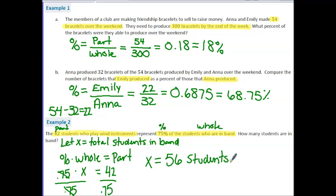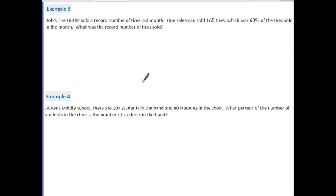But you don't always have to use this. Sometimes it's more helpful to do what's called translating. So let's take a look at an example where we would want to translate in example three. Bob's Tire Outlet sold a record number of tires last month. One salesman sold 165 tires, which was 60% of the tires sold in the month. What was the record number of tires sold? So what I'm really focusing on for my translating here is the statement, one salesman sold 165 tires, which was 60% of the tires sold.